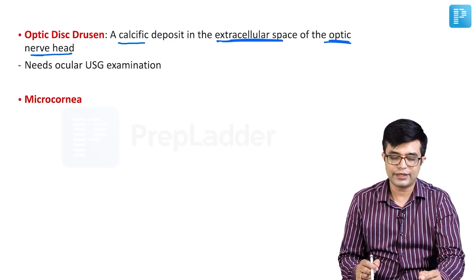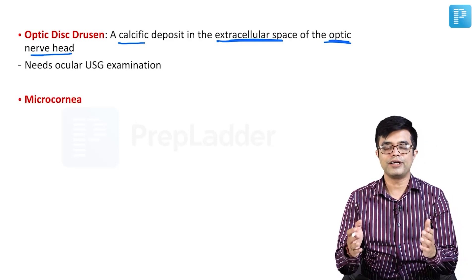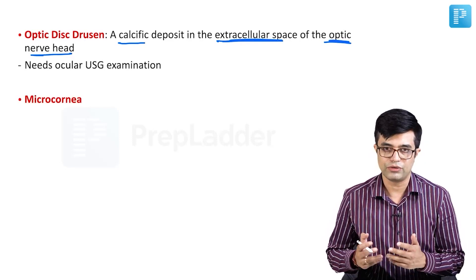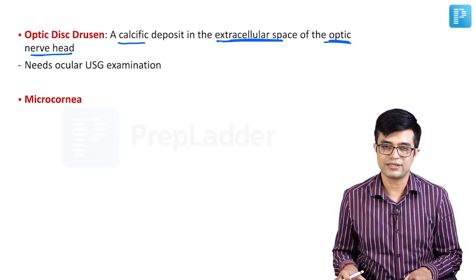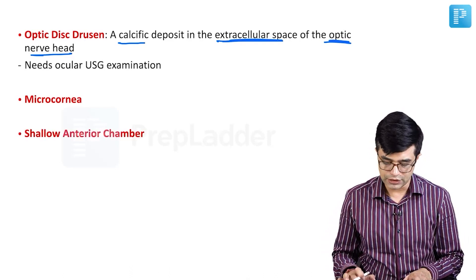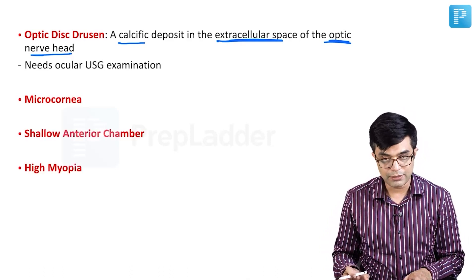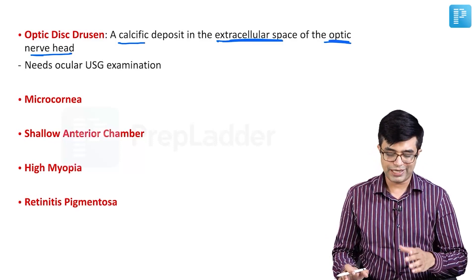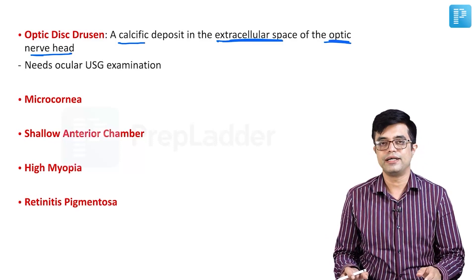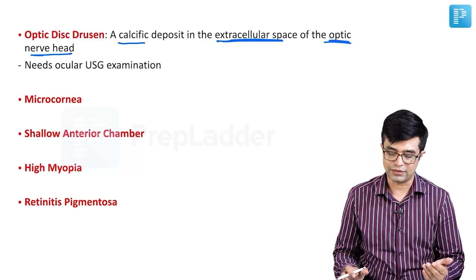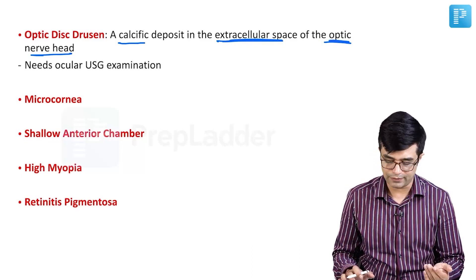Other eye abnormalities that can sometimes be seen include microcornea, shallow anterior chamber, high myopia, and pigmentary changes in the retina — the so-called retinitis pigmentosa pattern.